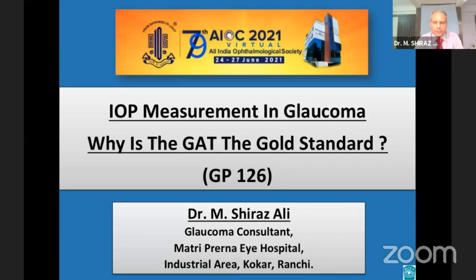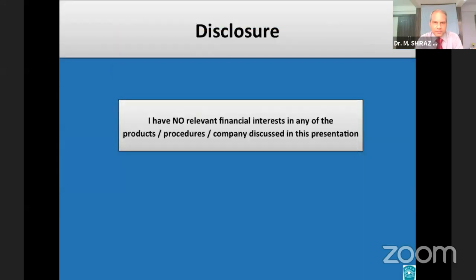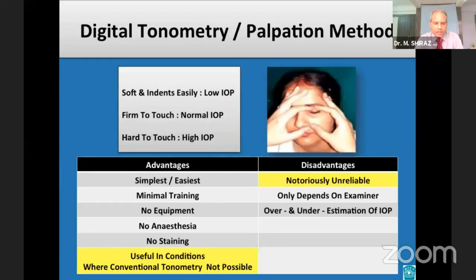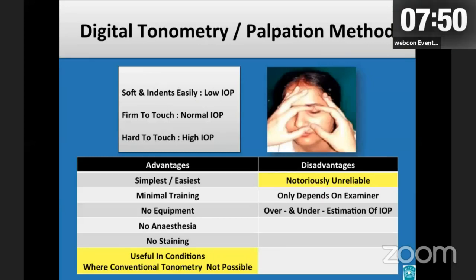Good afternoon to all of you. The technology used to estimate intraoperative pressure has evolved tremendously. IOP estimation by tactile assessment is the simplest and easiest way to perform tonometry. Unfortunately, the IOP estimation is notoriously unreliable in most cases.